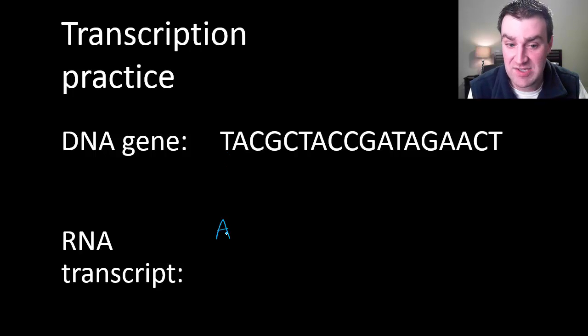RNA still has A to pair with DNA T, but it has a uracil instead of thymine to pair up with A, and it still has guanine and cytosine just like before. So maybe if it continues to copy in this direction it would make this as the copy.